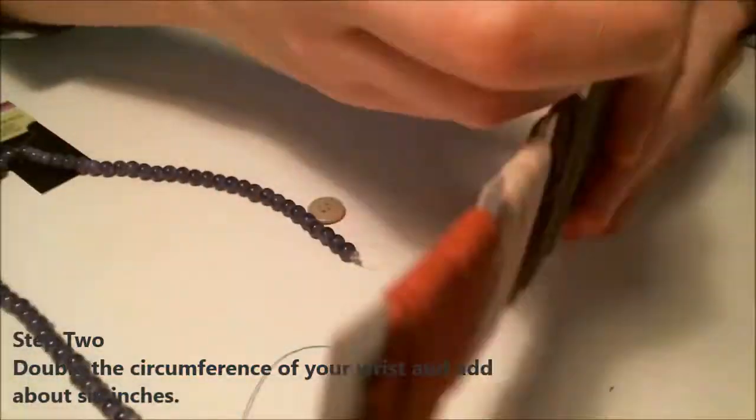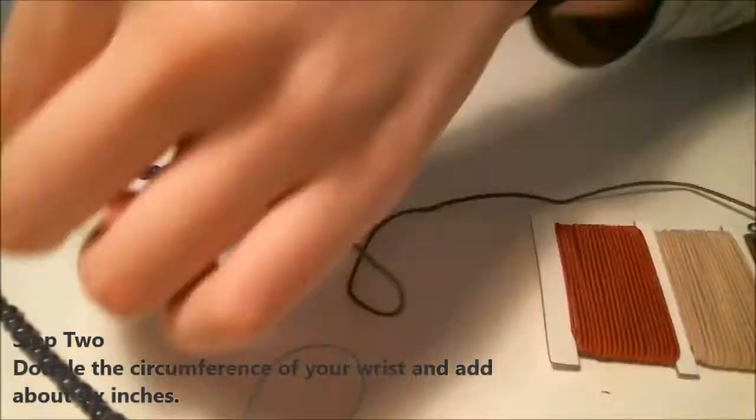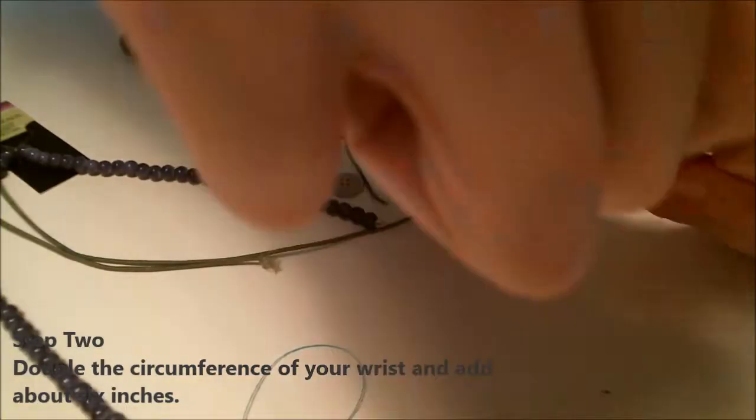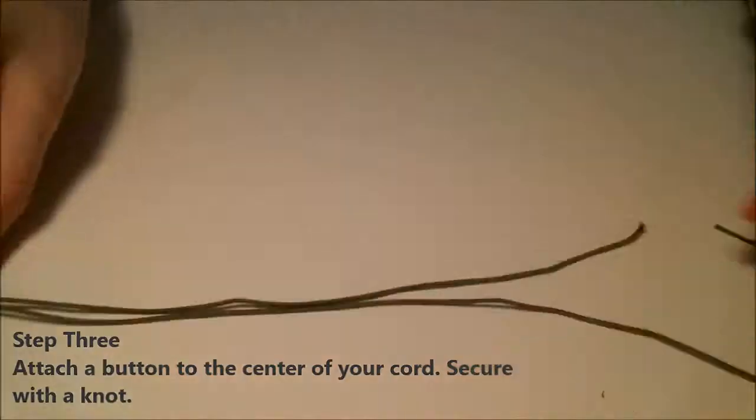Next, select the colors you want to use in your bracelet. Then take the piece of elastic and cut a piece that's about twice the circumference of your wrist, plus six inches.